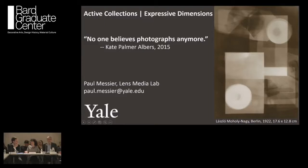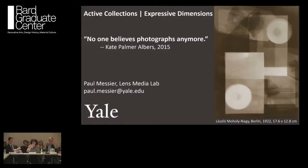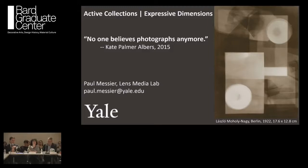I'm going to talk about active collections and expressive dimensions, playing to my strength: the material history of photographic materials. Nobody believes photographs anymore — the mutability of meaning and shifting meanings, especially relating to photography's supposed mechanistic objectivity. So if we can't believe images, can we believe materials? This is the largest authenticity scandal in the fine art photography market, which landed on my doorstep about 20 years ago. The prints in question were signed on the verso — the image is by Lewis Hine, but the question was: did Lewis Hine ever see this print? Is there an authentic tether from this object to Lewis Hine?